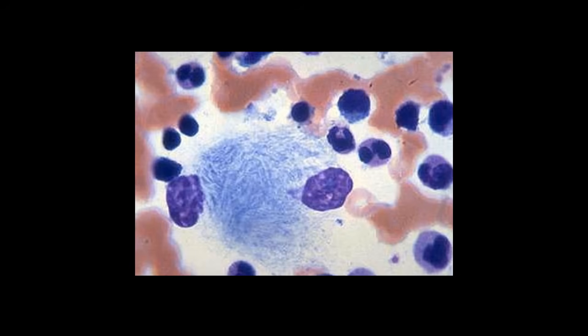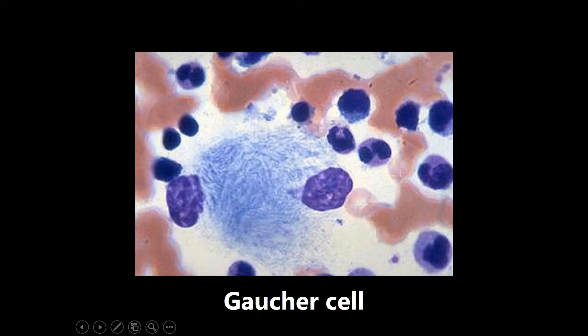The next image is a Gaucher cell — a lipid-laden macrophage that a lot of people say looks like crumpled up tissue paper. This Gaucher cell is seen in Gaucher disease. It's really high yield to know the pathophysiology: Gaucher disease is characterized by a deficiency of glucocerebrosidase, which causes a buildup of glucocerebroside. You need to know what enzyme is deficient and what builds up for all lysosomal storage diseases and glycogen storage diseases.